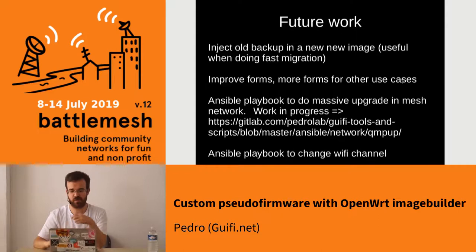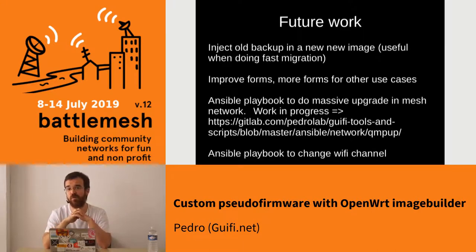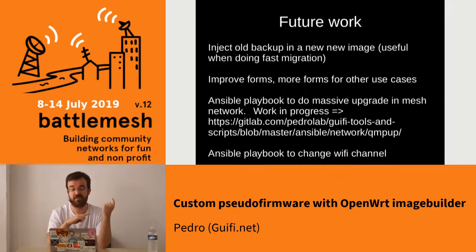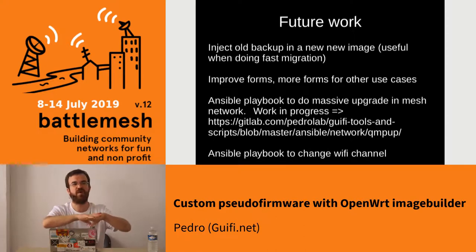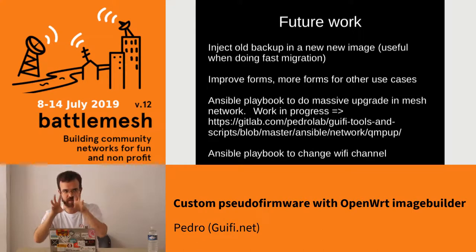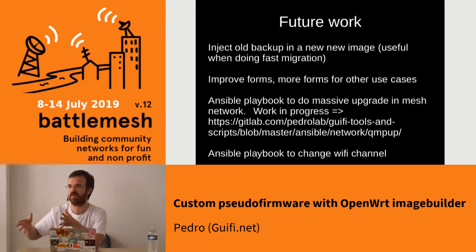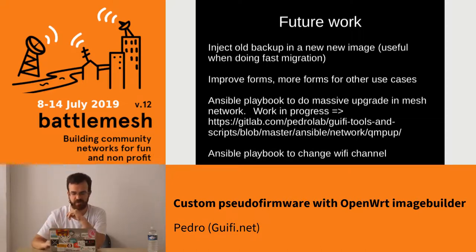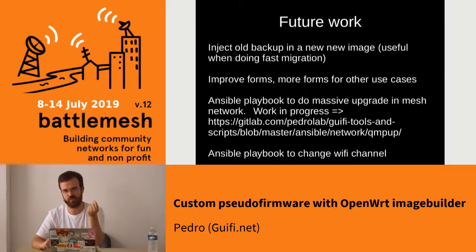Improve the forms — more forms for other use cases. The web development part of this can be very creative in how you want to present information to the user so it's able to do all the magic. This part is like chef.libremesh.org — very similar, but their approach is different because they want to make one firmware the same for all the network. This has broader applications, not only for community networks, also for testing corporate networks where you want the same firmware. And an Ansible Playbook to do a massive upgrade in a mesh network — I did some scripts a long time ago and now feel comfortable to work on that again. When that time comes, QMP downloaded the same image for all nodes, but now we can upload that specific firmware for that specific node, giving more control and better expected results. And then a playbook to change the Wi-Fi channel.